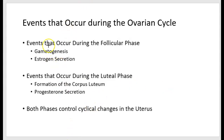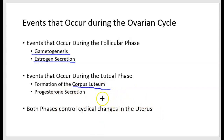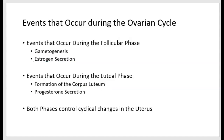The main events during the follicular phase are gametogenesis and estrogen secretion. The main events in the luteal phase are formation of the corpus luteum and the secretion of progesterone. Both of these phases control the changes we see in the uterus during the uterine cycle or menstrual cycle. So ovarian hormones — estrogen and progesterone — are going to control the lining of the uterus.